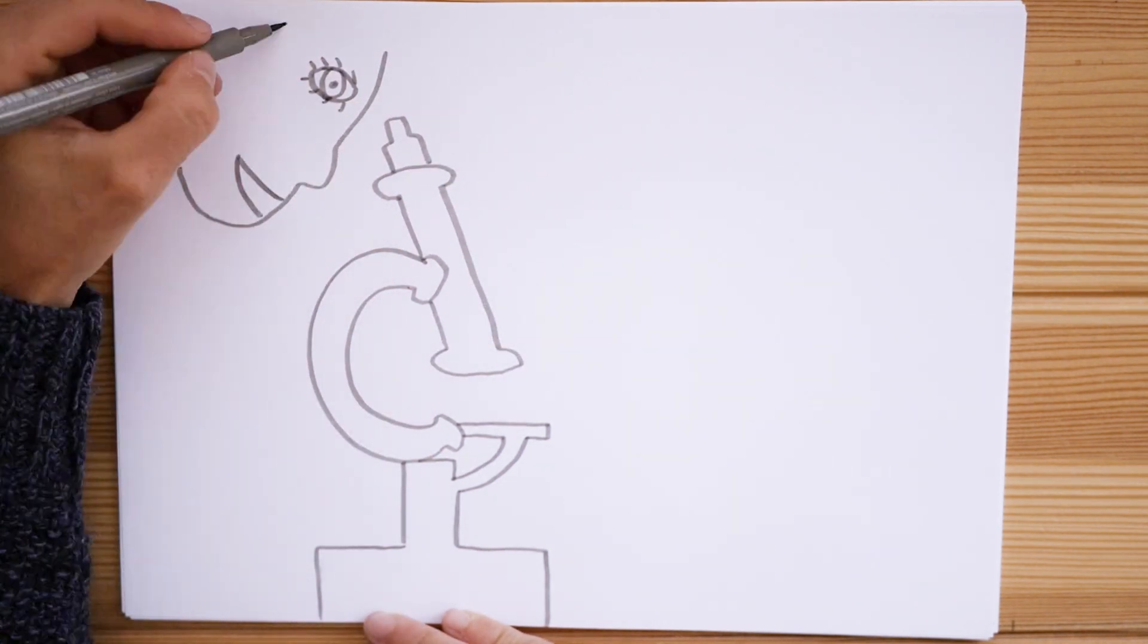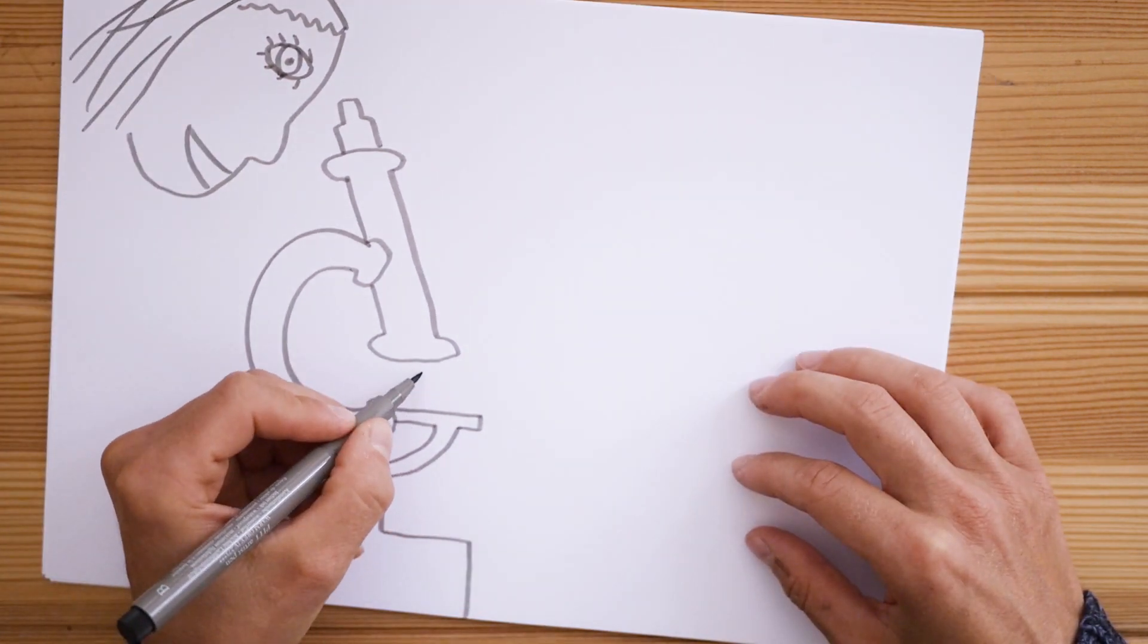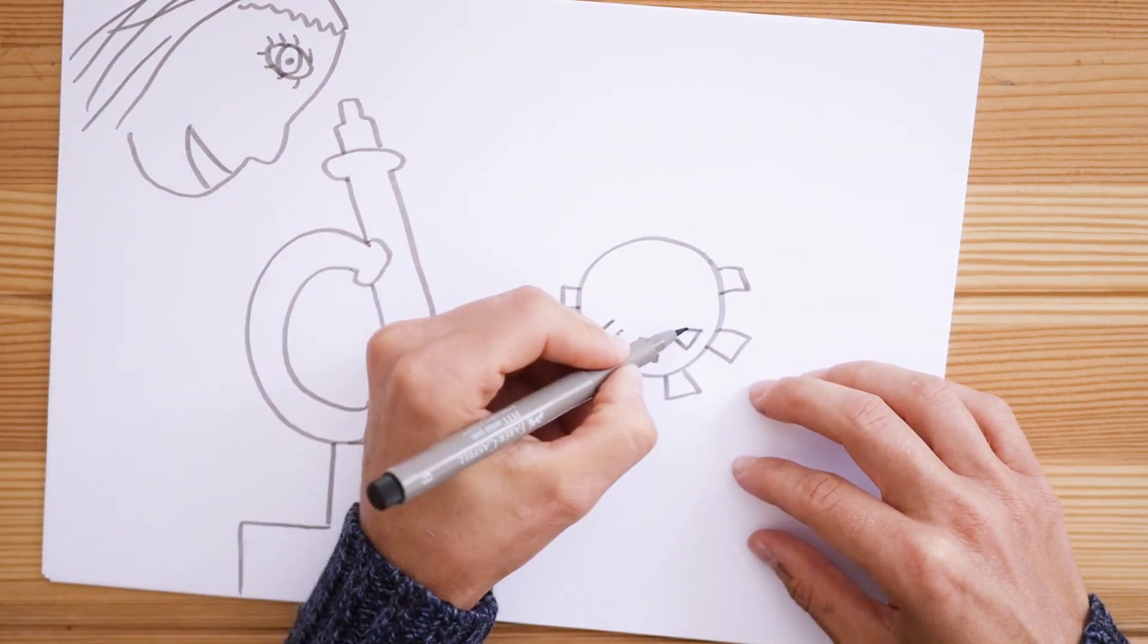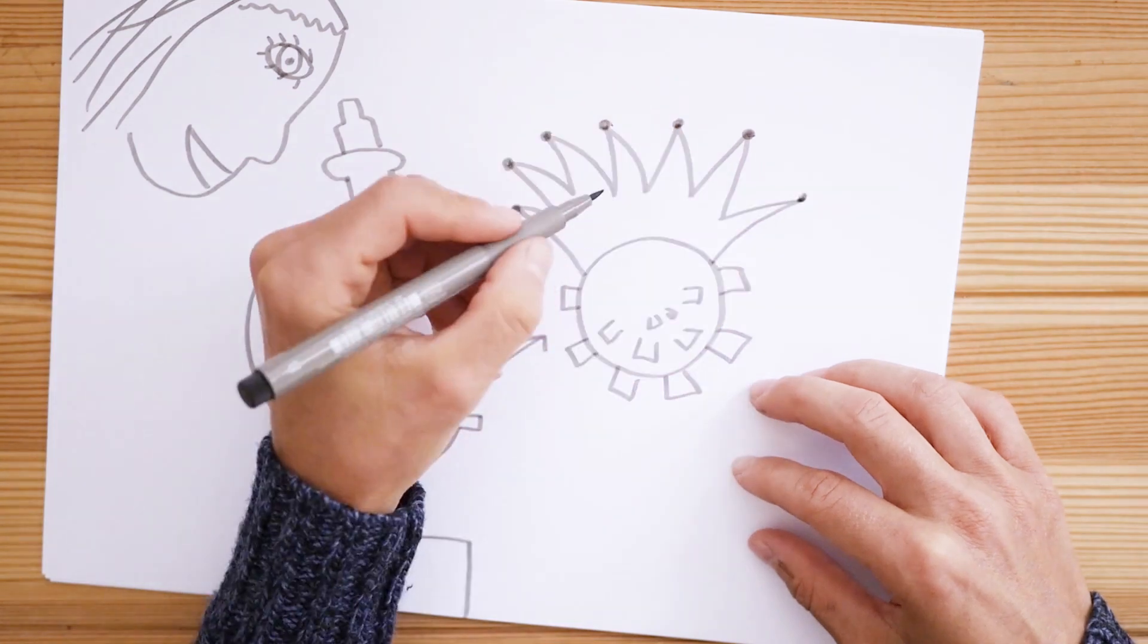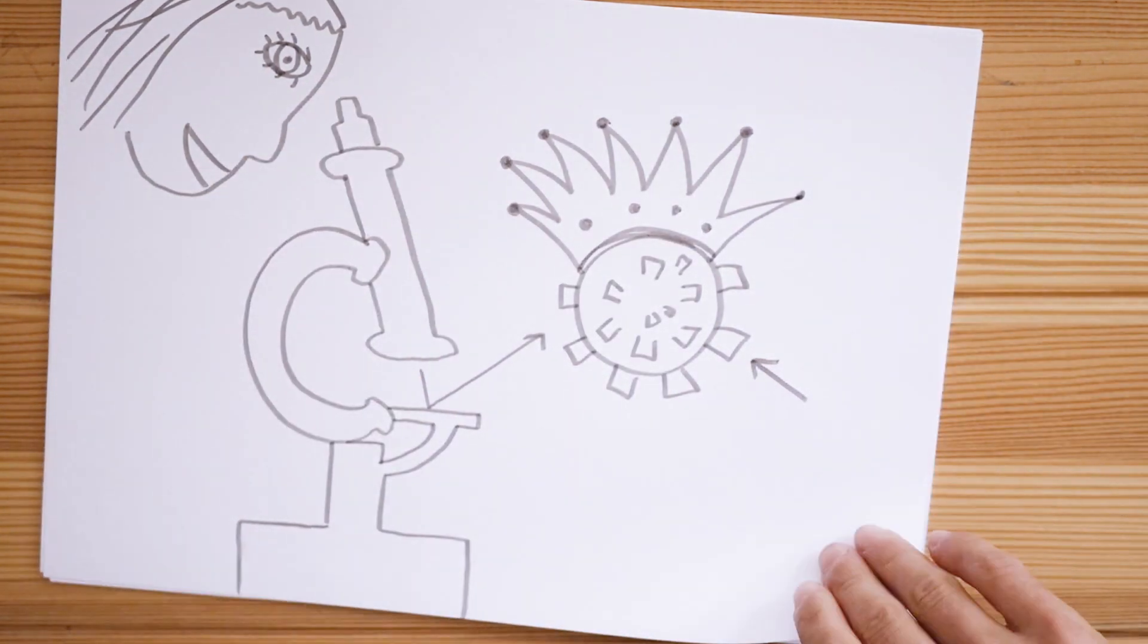With these microscopes they can see small hooks on the surface of the coronaviruses, which look like a crown. That is why they are called coronaviruses. Corona is the Latin word for crown.